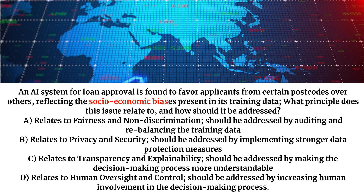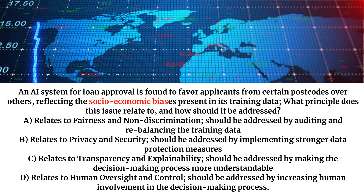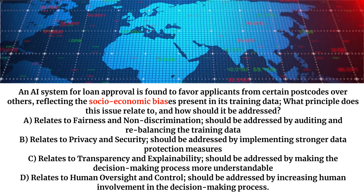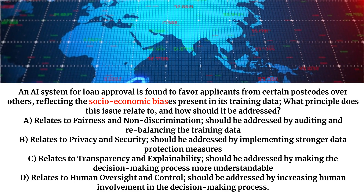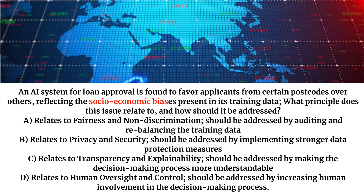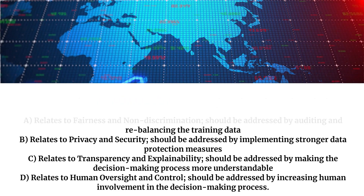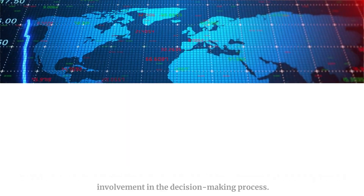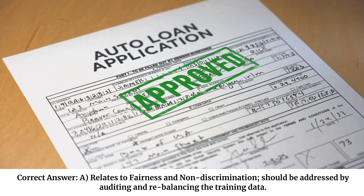A. Relates to fairness and non-discrimination; should be addressed by auditing and re-balancing the training data. B. Relates to privacy and security; should be addressed by implementing stronger data protection measures. C. Relates to transparency and explainability; should be addressed by making the decision-making process more understandable. D. Relates to human oversight and control; should be addressed by increasing human involvement in the decision-making process. Correct answer: A — Relates to fairness and non-discrimination; should be addressed by auditing and re-balancing the training data.